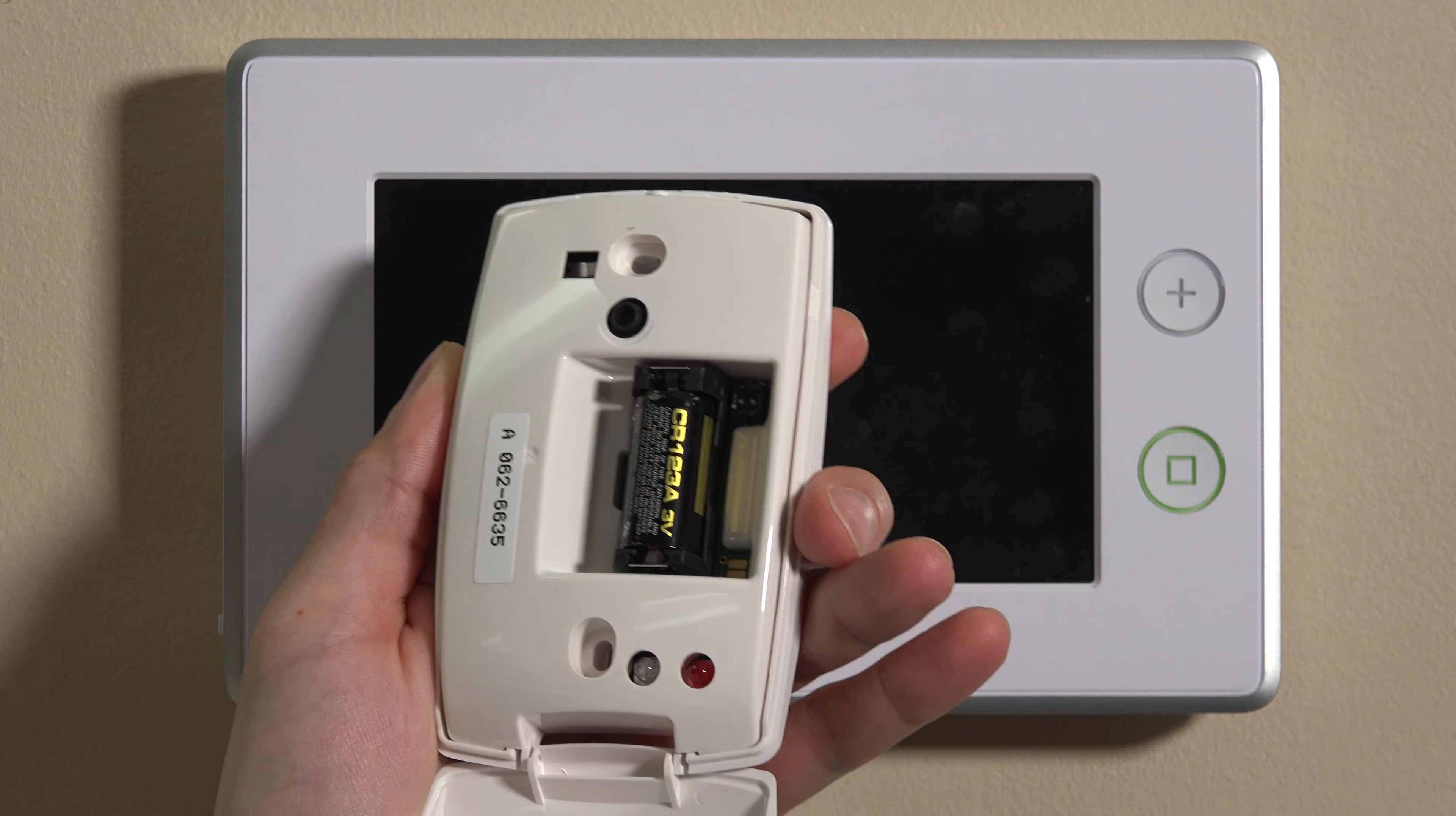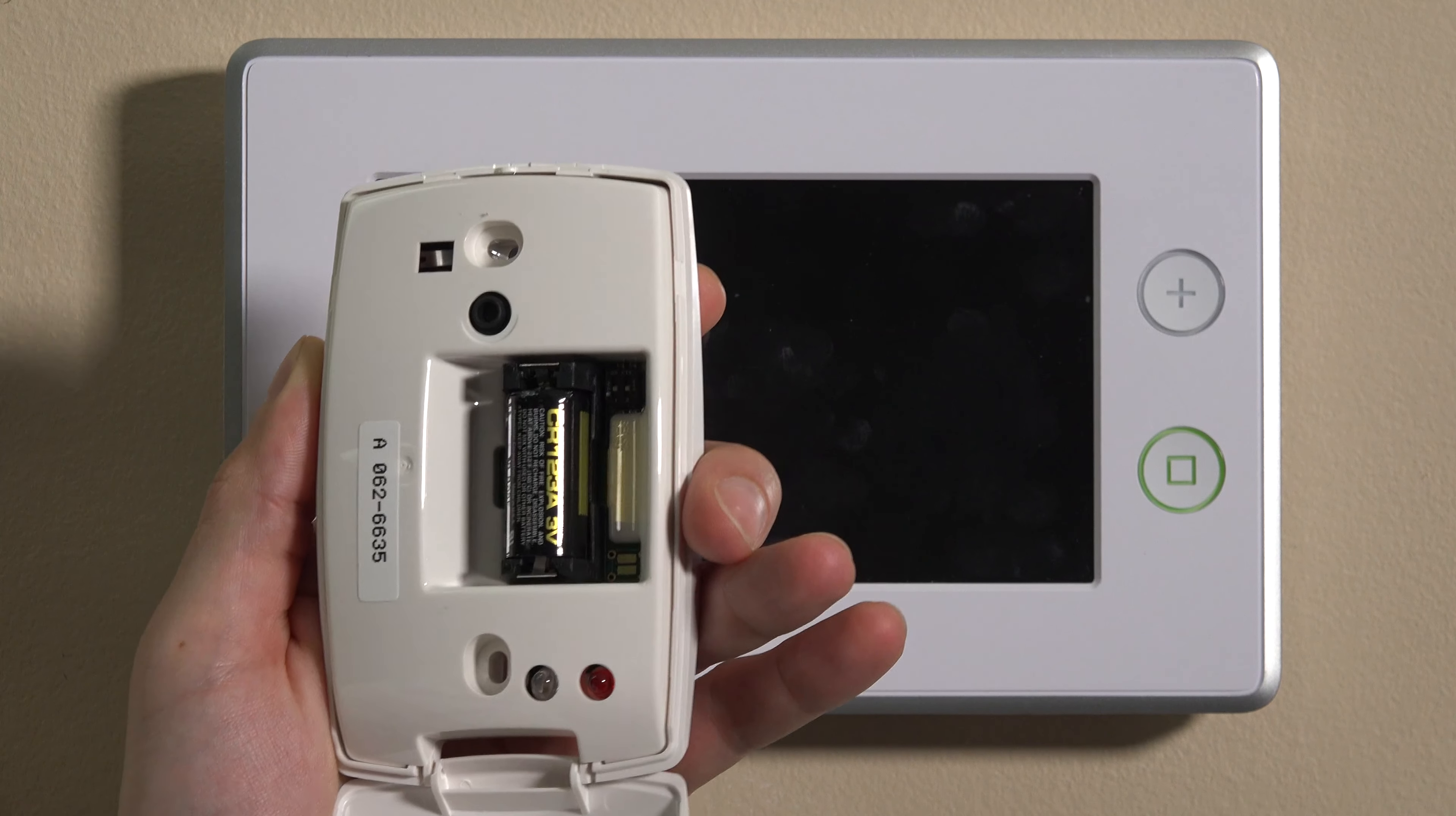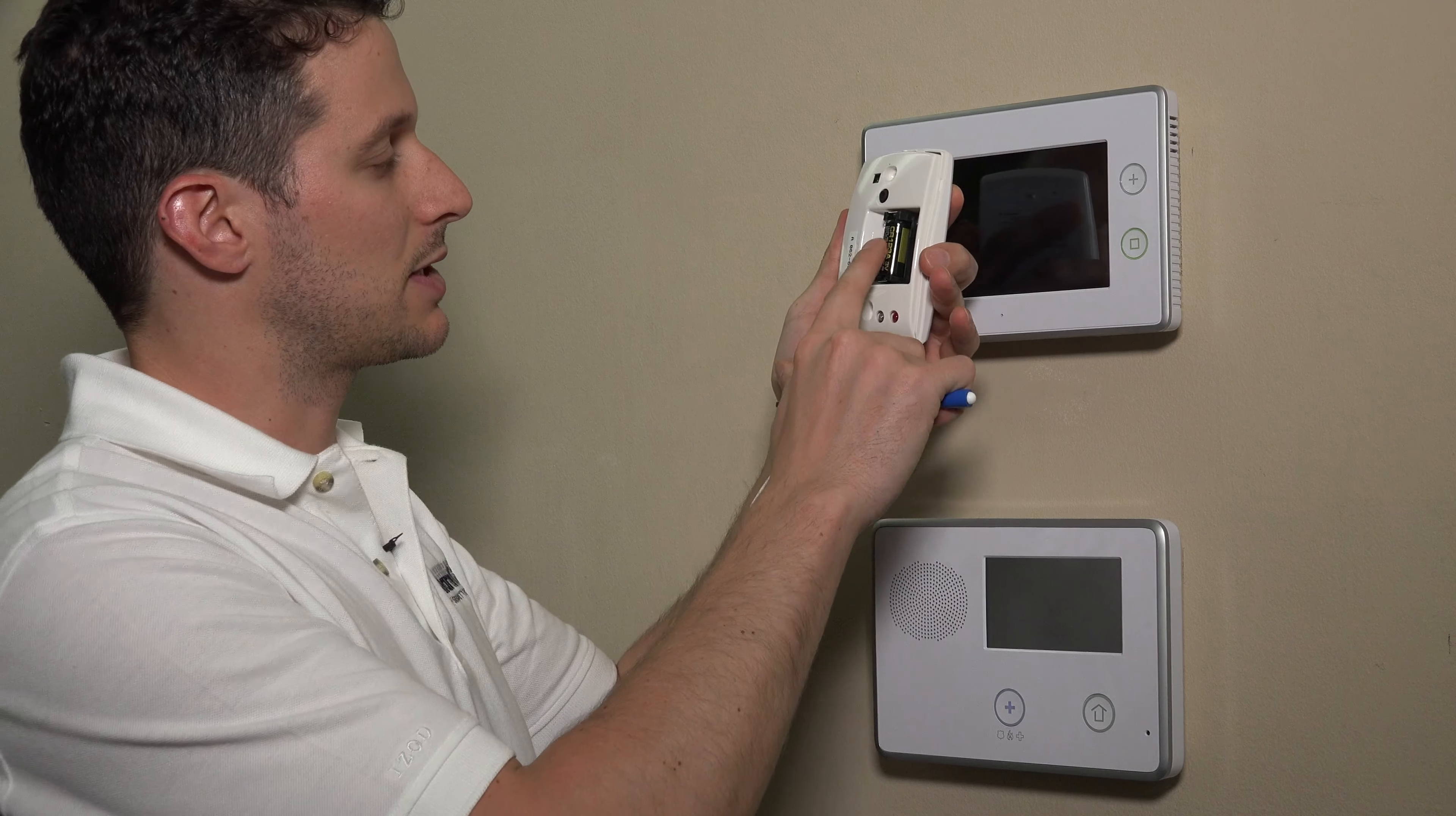That will activate the glass break. You'll see the lights come on. And basically this is just a way to prevent this battery from draining when this is stocked in inventory before it ends up at the customer's secured premise. So now that this battery is active...